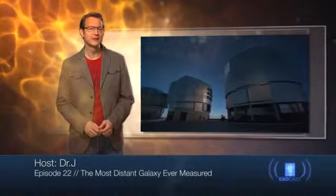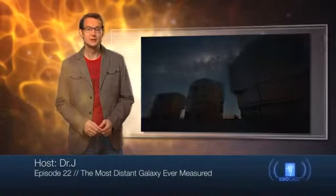Hello and welcome to the ESOcast. In this episode, we're going to find out how a team of astronomers used ESO's Very Large Telescope, the VLT, to confirm that a galaxy that had previously been spotted in images from the NASA-ESA Hubble Space Telescope is in fact the most distant object that has ever been identified in the Universe.